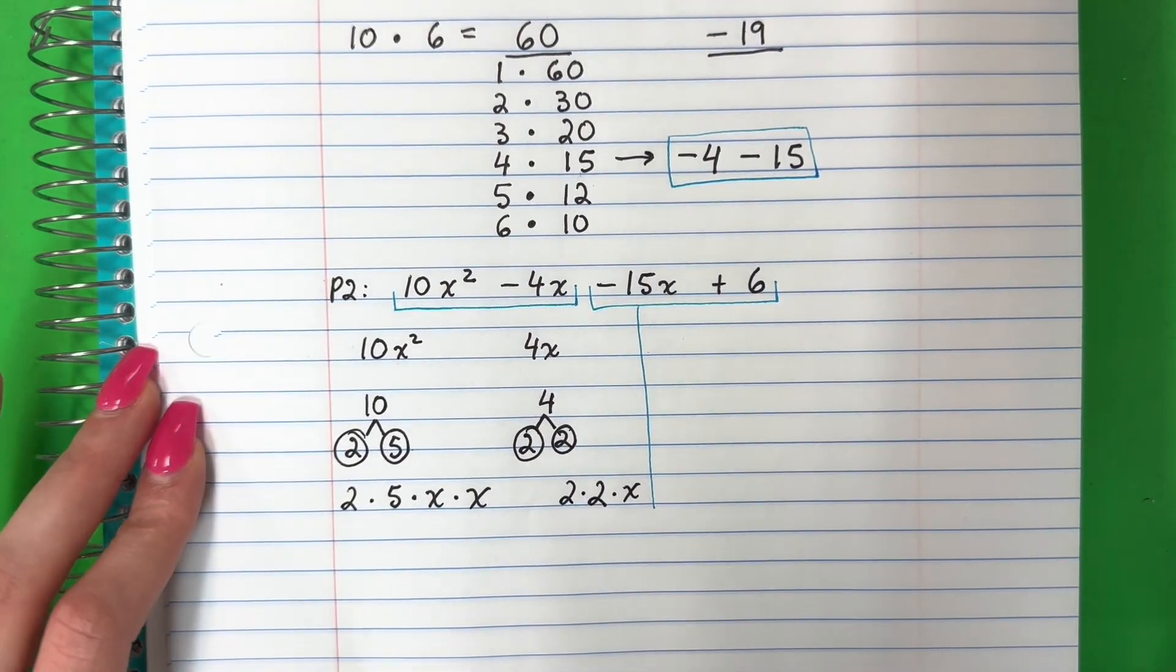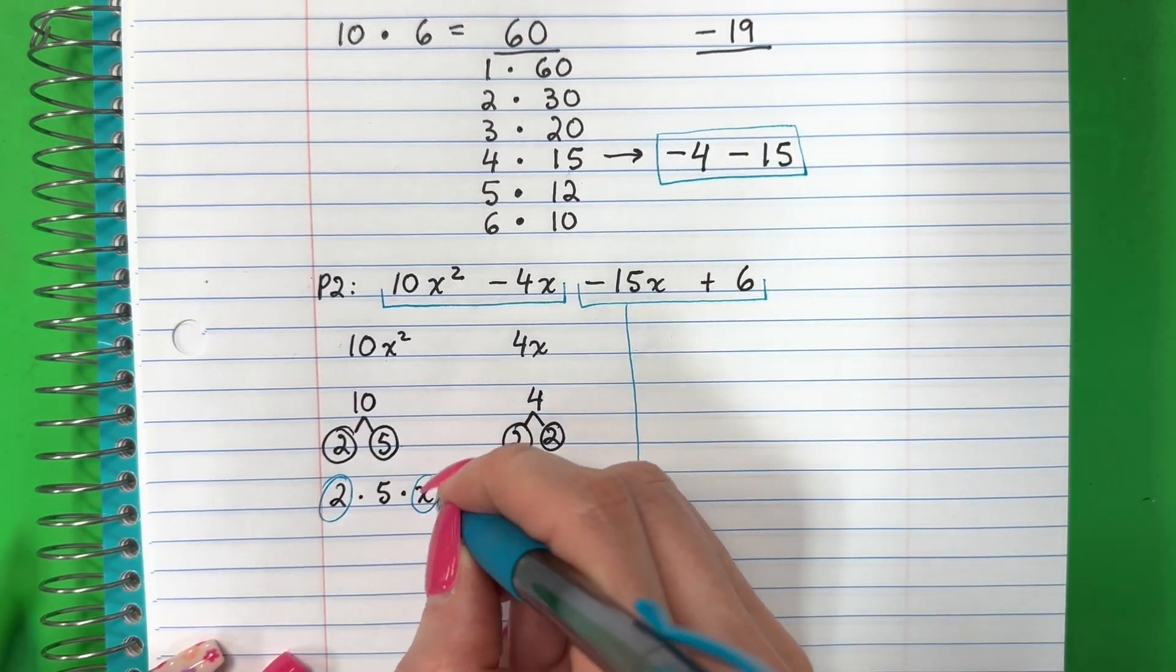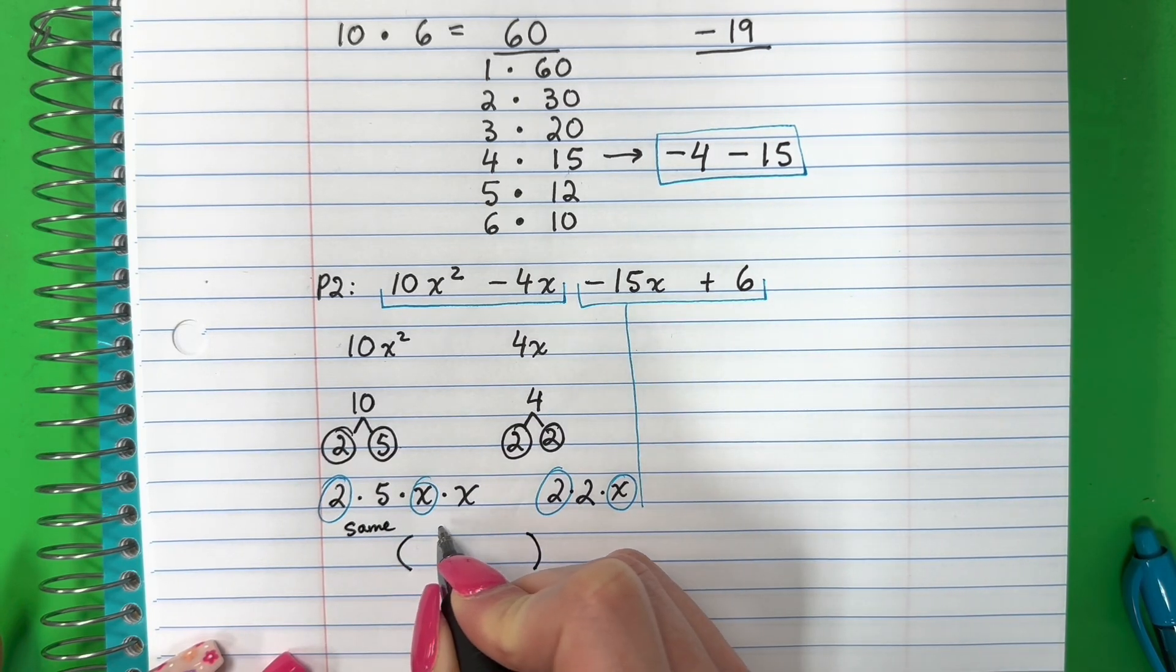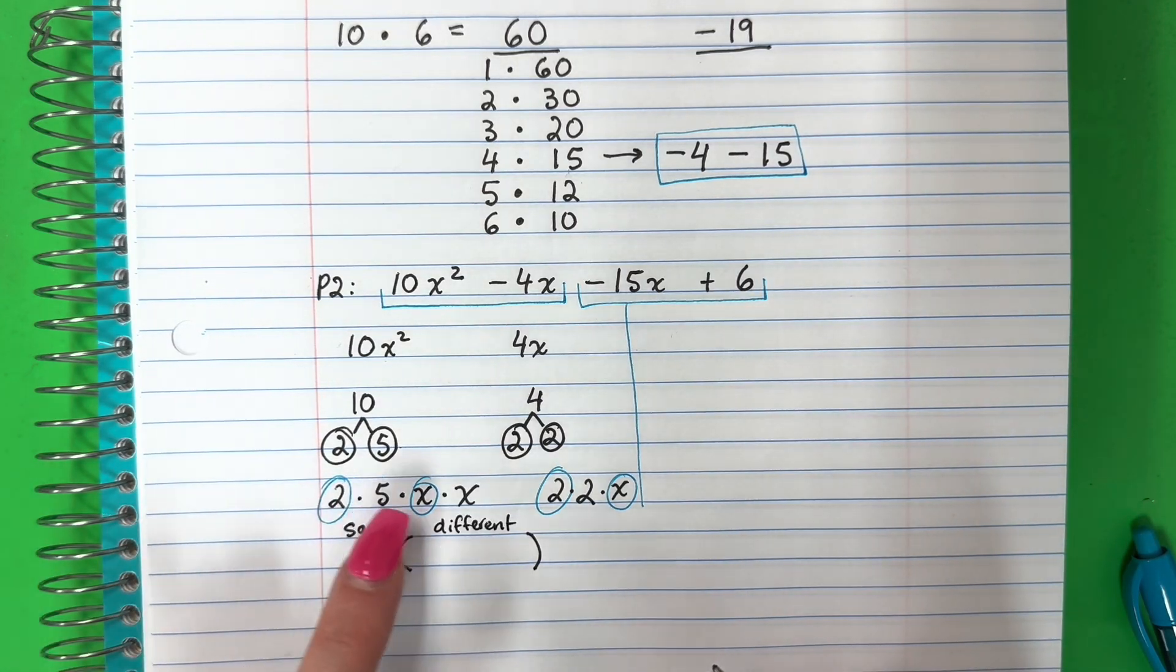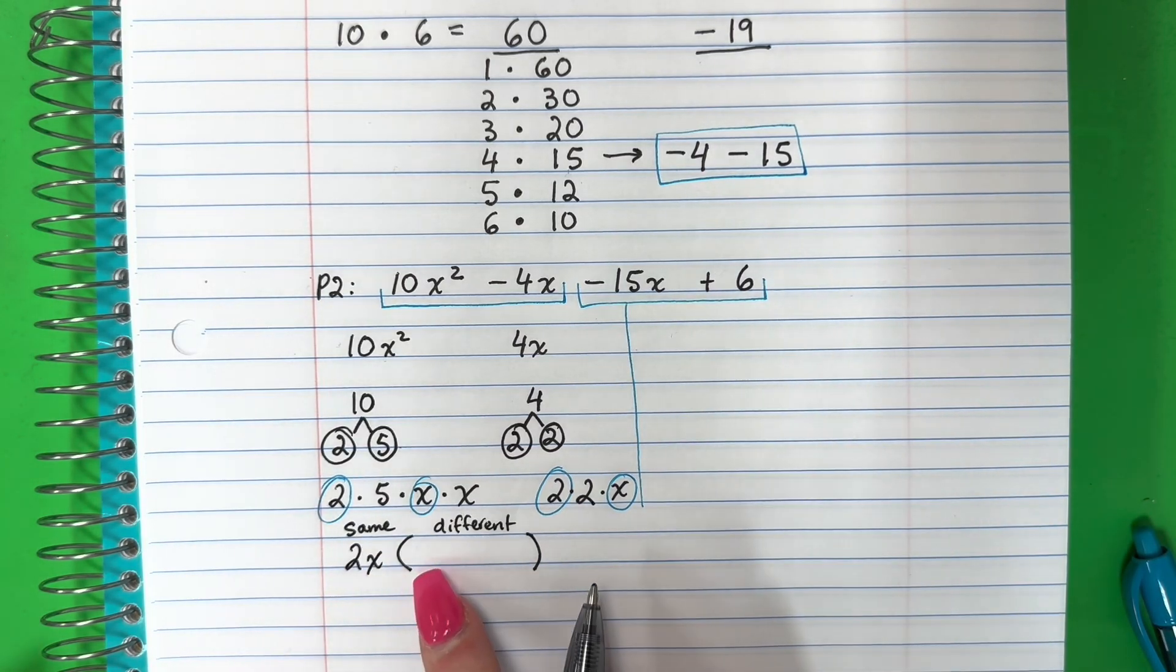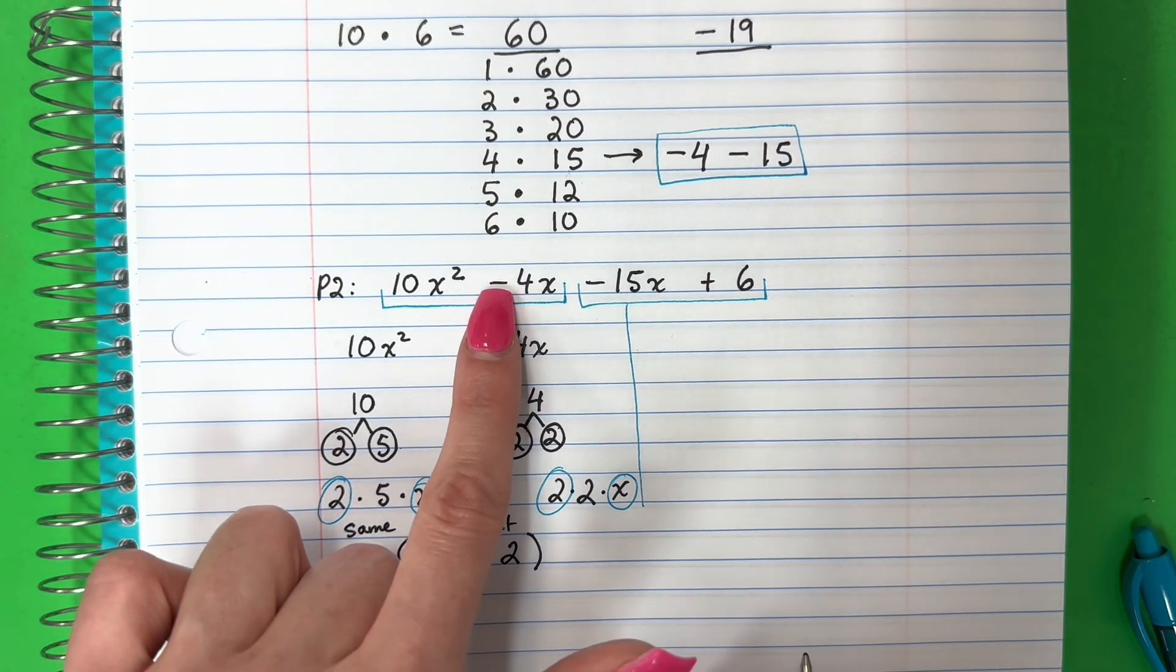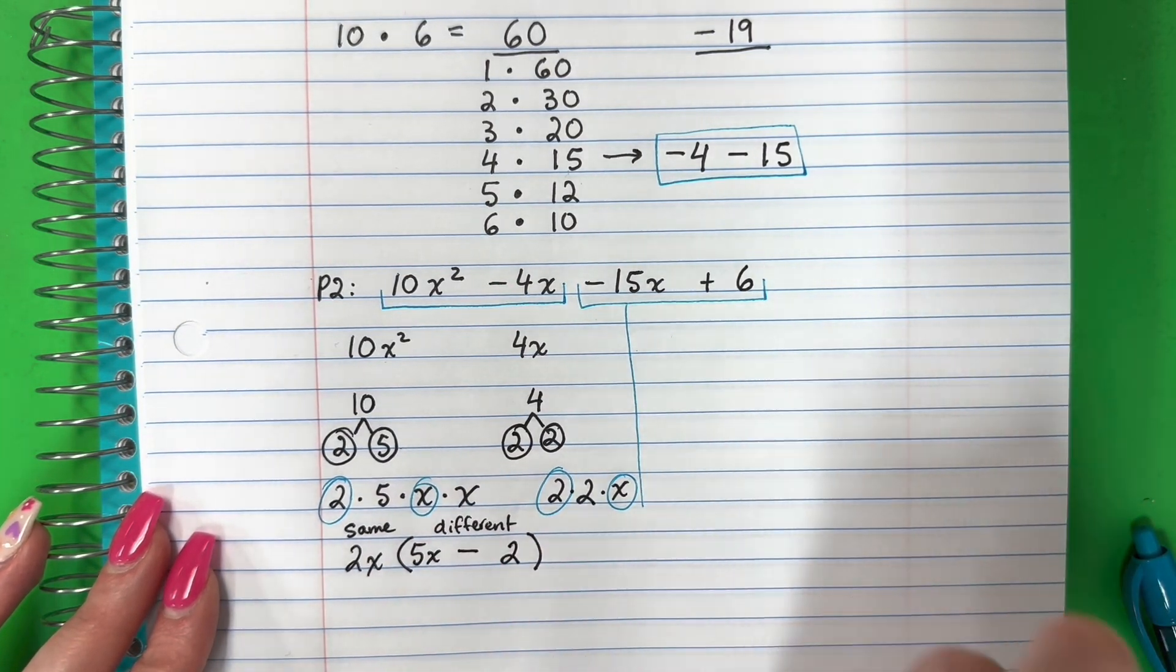Okay. So which ones do I have the same? ¿Cuáles tengo iguales? I have a two and an x. So we're going to go ahead and do our parentheses. The same go outside, lo mismo que están afuera, and the different y los diferentes inside, adentro. What's the same? ¿Qué es lo mismo? Two x. So I will put two x outside. Now the different, this is five x. This is two. And look, mira, the original sign, el signo original, it's minus. It's menos. I will go ahead and put that in there. Okay.